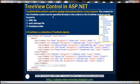The TreeView web control is useful to display hierarchical data in a tree structure. Just like the ASP.NET menu control, the content for the TreeView control can be specified either directly within the control itself, or the TreeView control can be bound to an XML file, a web.sitemap file, or to a database table. In this video we'll discuss specifying content directly within the control itself, and in a later video session we'll discuss binding the TreeView control to different data sources.